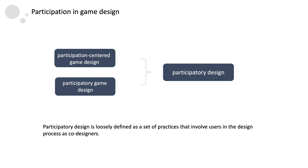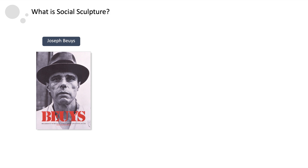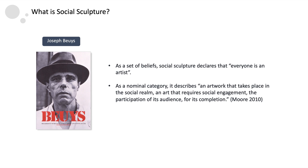What the concept of social sculpture can add to this body of work is an expansive definition of participation. So, what is social sculpture? It is coined by German artist Joseph Beuys in the late 1960s to refer to both a set of beliefs and a nominal category of artworks. As a set of beliefs, social sculpture declares that everyone is an artist. As a nominal category, social sculpture describes an artwork that takes place in the social realm, an art that requires social engagement, the participation of its audience for its completion.